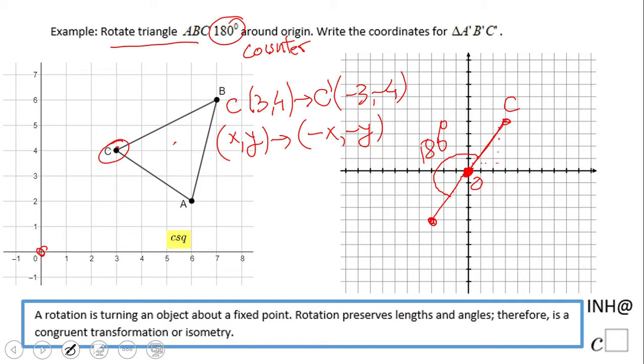A very simple rule for rotating 180 degrees: just keep the same position for x and y, switch the sign. So let's do the other two points. Point A is (6, 2).